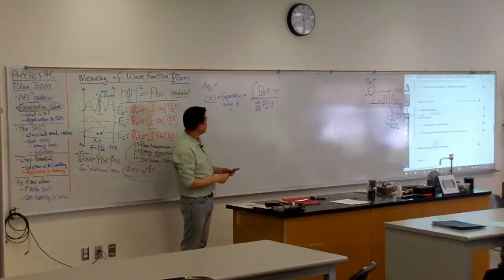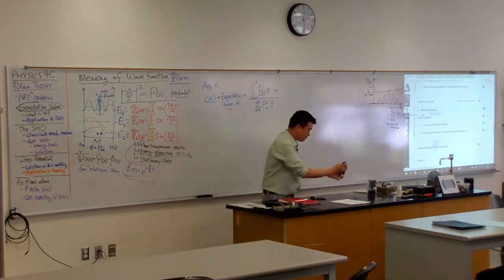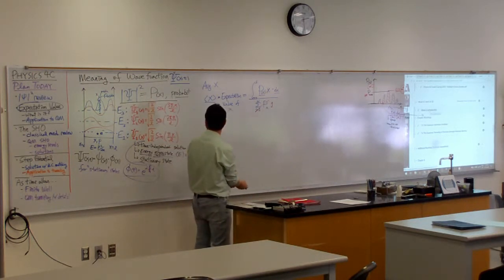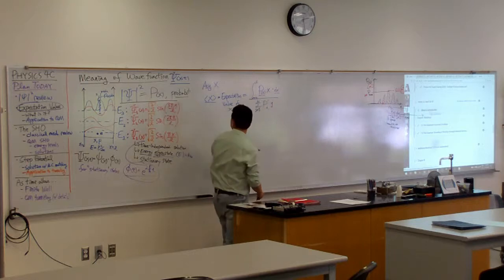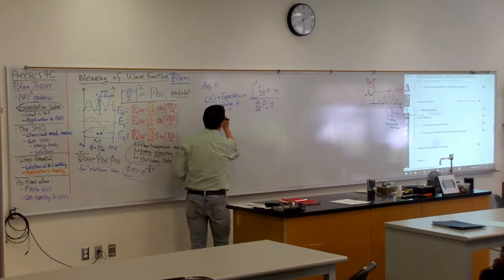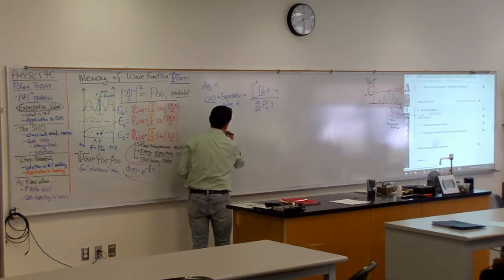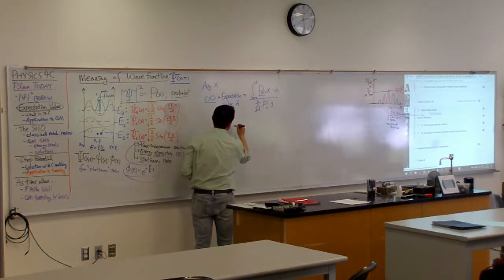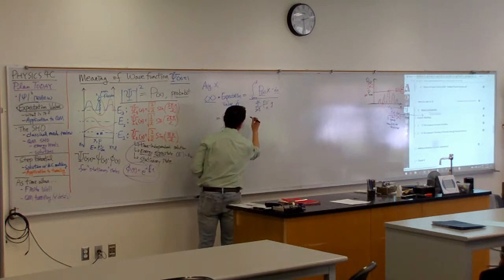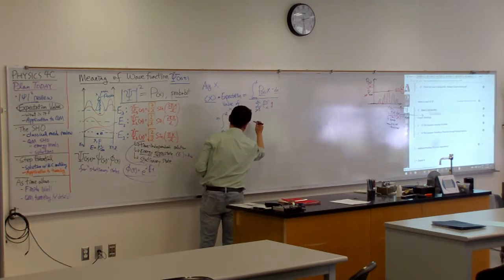Let me write down one more step to actually give you the quantum mechanical formula. So this probability density is psi squared. So this expectation value of x is integral from x equals zero to L. Psi of x squared times x dx.